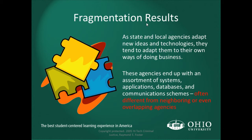Fragmentation results: as state and local agencies adopt new ideas and technologies, they tend to adopt them in their own ways. Their processes might differ from ours. These agencies end up with an assortment of systems, applications, databases, and communication schemes often different from neighboring or even overlapping agencies. When processes and practices are different, it creates difficulty exchanging information even when both parties are willing.